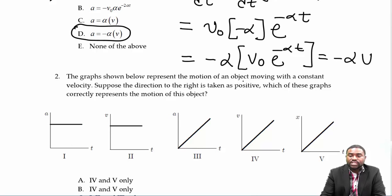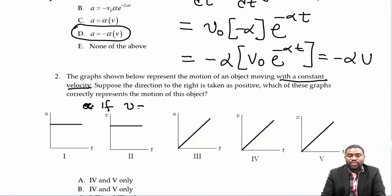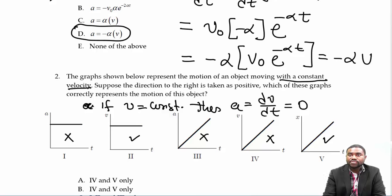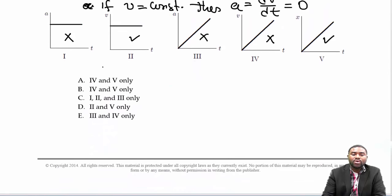The object is moving with a constant velocity. If v is constant, then the acceleration, defined as dv/dt, will be zero. So this graph is not right — here acceleration is zero. This graph is not right — here acceleration is constant. This is the right graph. Our answer will be D.